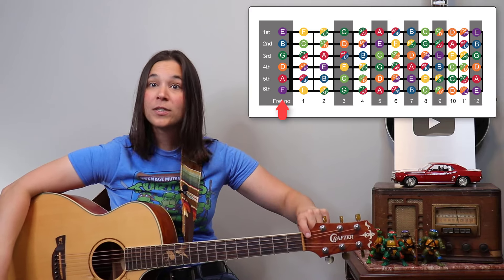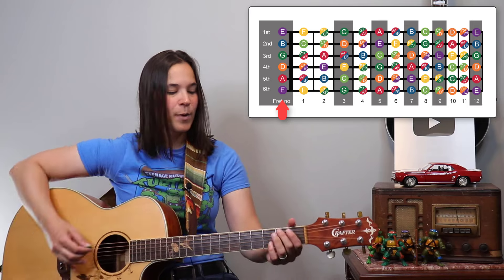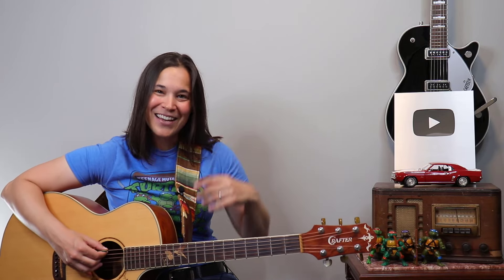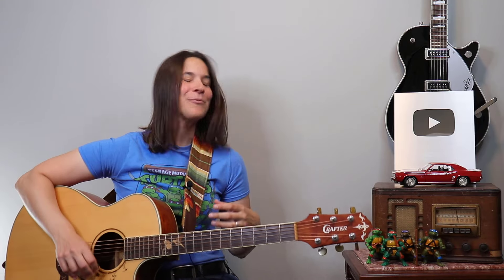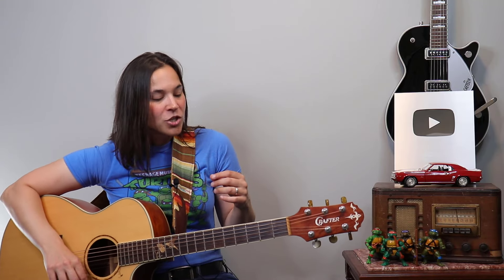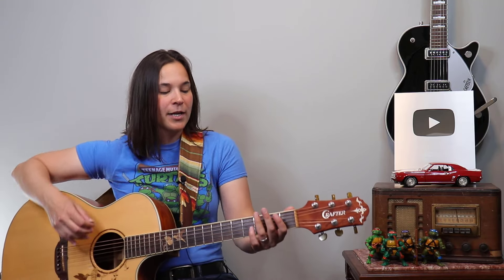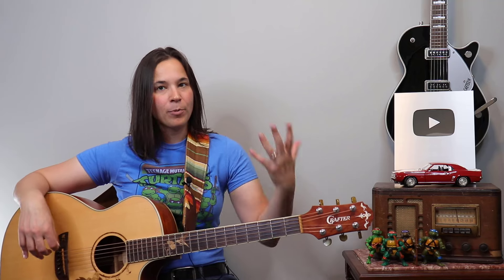Well, G is the third fret on the top string, and I count back three frets — the third fret back is the open string. That's why a lot of their licks and stuff are on the open strings; it's pretty cool. You can check out my Sweet Home Alabama lesson if you want — I show you some cool stuff in that.